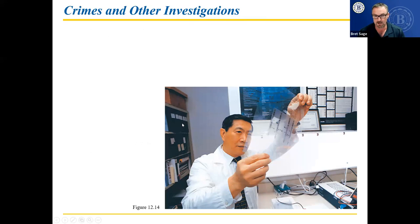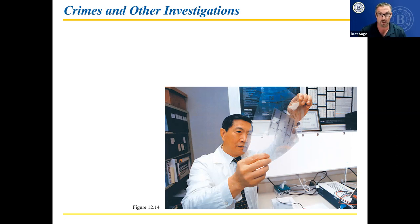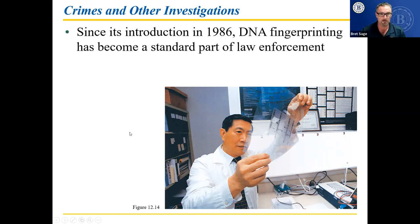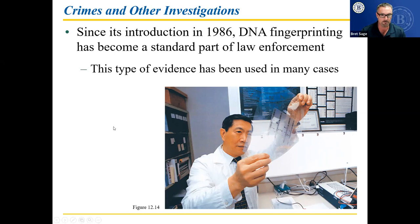This is Dr. Henry Lee, who became famous in 1995 because of his involvement with the O.J. Simpson case. O.J. Simpson's wife and her boyfriend were murdered, and O.J. Simpson's blood was found at the crime scene. Dr. Henry Lee got on the stand — this was a public murder trial, still a very rare thing — and talked about how DNA fingerprinting determined that blood at the crime scene belonged to O.J. Simpson. Since its introduction in 1986, DNA fingerprinting has become a standard part of law enforcement.